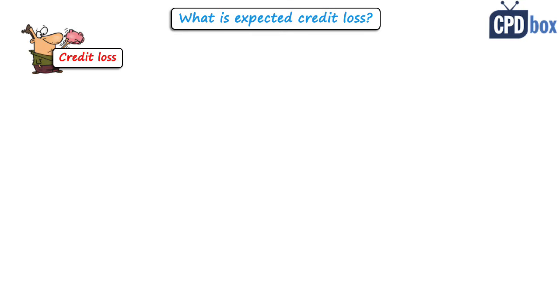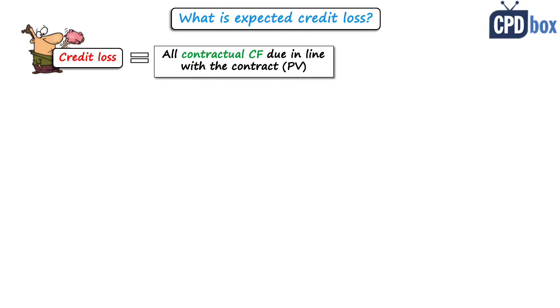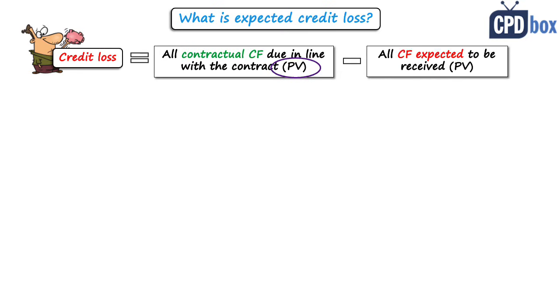Let's explain what expected credit loss is. To understand it, let's explain the term credit loss in simple words. Credit loss is the difference between all contractual cash flows that are due to an entity in accordance with the contract — in other words, what you would normally expect to receive — and these cash flows are in their present value, so not gross but discounted. The second part of the equation is the cash flows that you can expect to receive, adjusted by some part you expect to lose, also discounted.